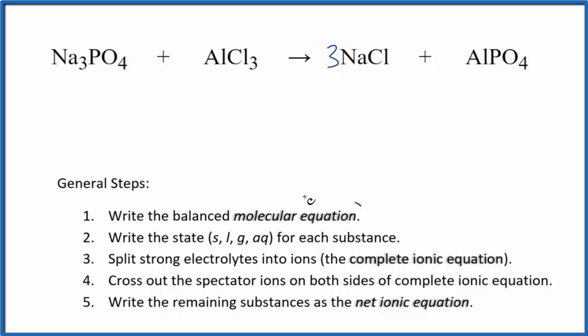Now we need to write the state for each substance. If you know your solubility rules, phosphates are often insoluble but sodium compounds are almost always soluble, so we know that this is going to dissolve, split apart into its ions. We write aq for aqueous. Chlorides are very soluble, we have another chloride and a sodium so that's going to be soluble.